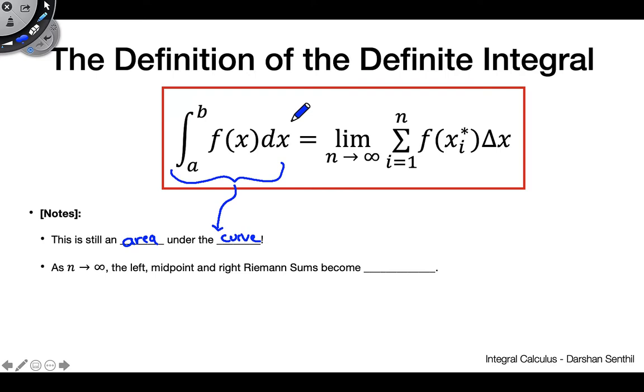So if we want to find displacement, and if f(x) is a velocity function, we want to find displacement, we give this definite integral, this definite integral is still going to tell us that. But now it's going to give us a much more precise answer than what this Riemann sum would do by itself.